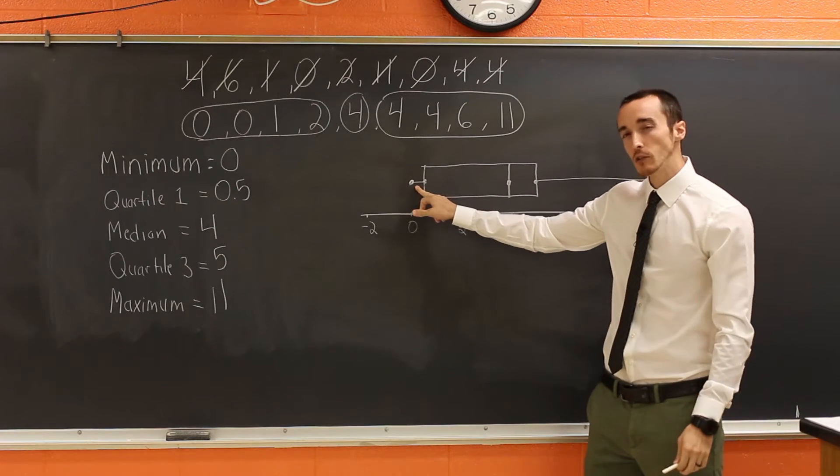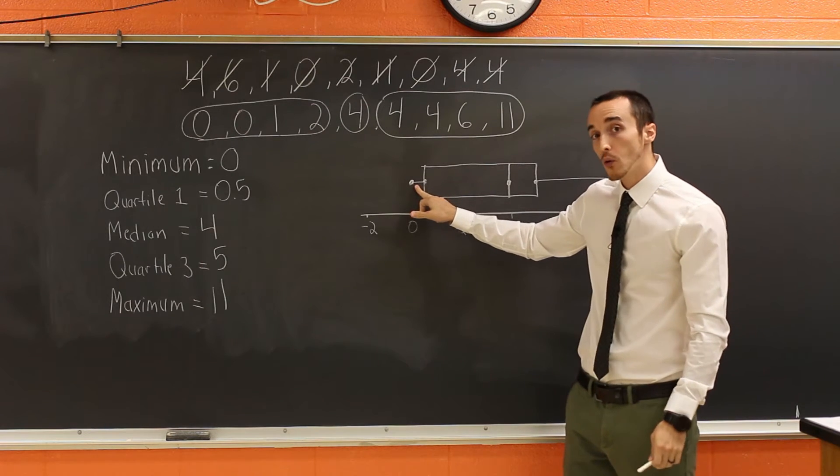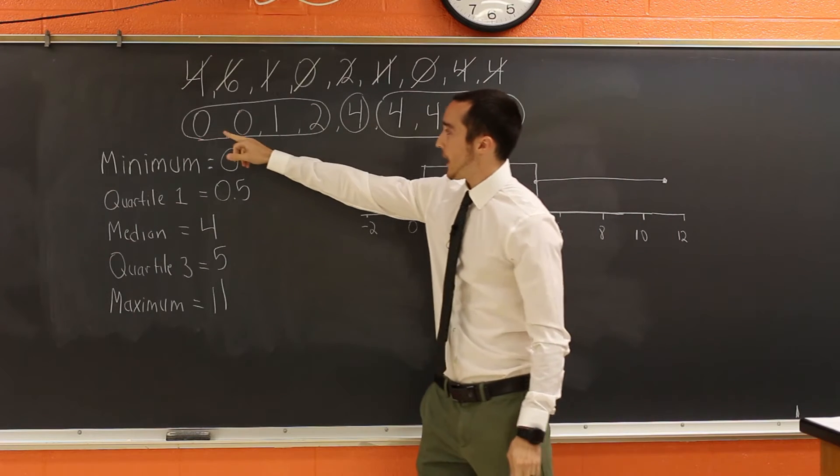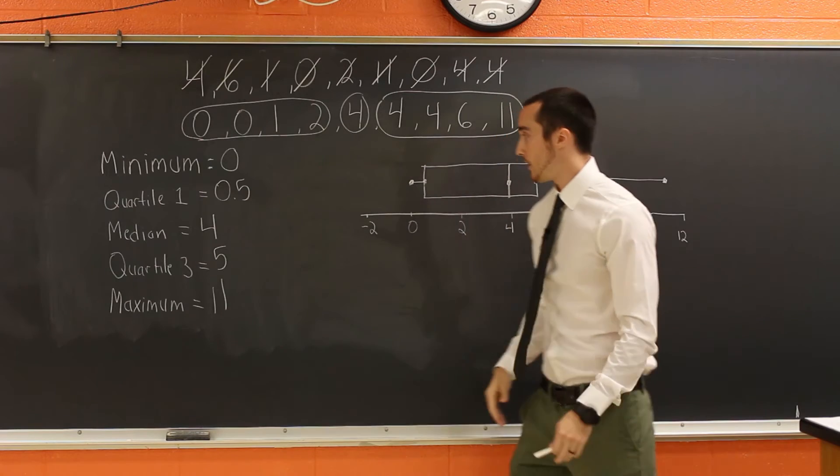So for instance, did you notice how small that whisker was, how tightly compacted? That means the lower one fourth of our data is very close together. And if you look at it, you can see that these numbers are very, very close together on the lower end.